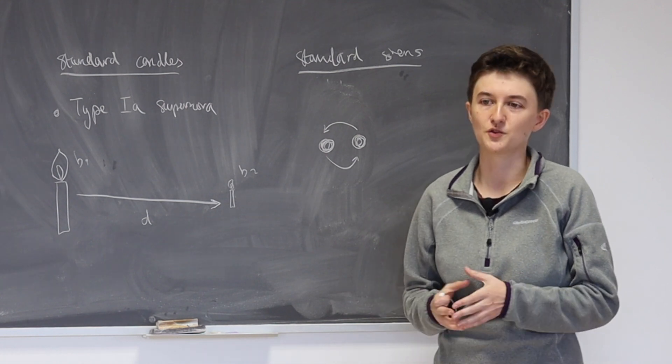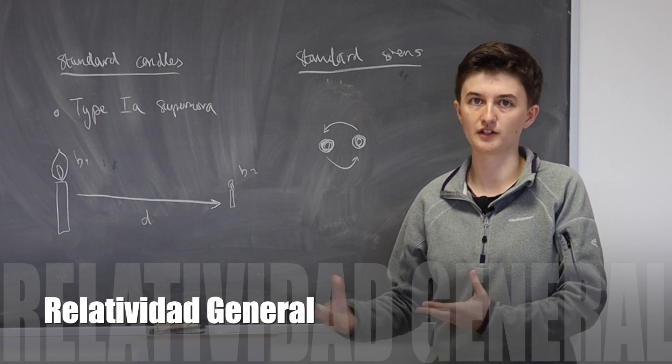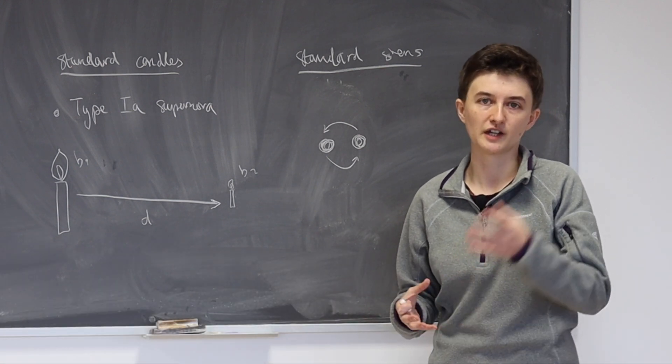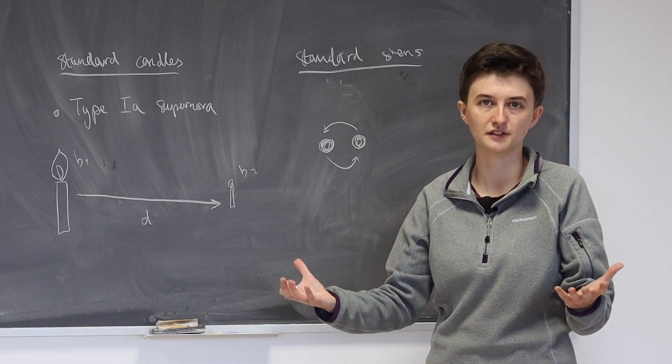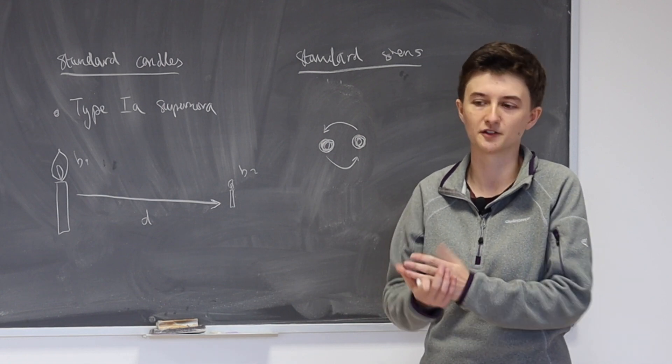So to understand what a gravitational wave is, we have to talk a little bit about general relativity, which is our current best theory of how gravity works. And in general relativity, we have, instead of having space and time as two separate entities, we simply have space and time combined together into one thing, which we call space-time.